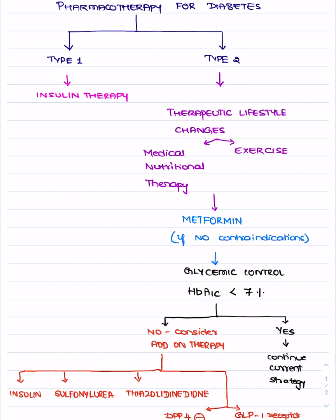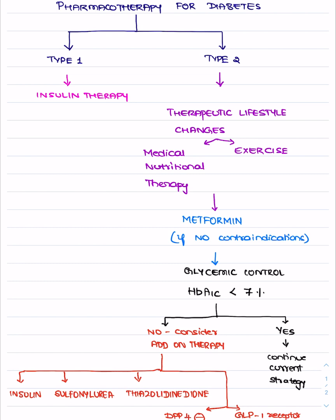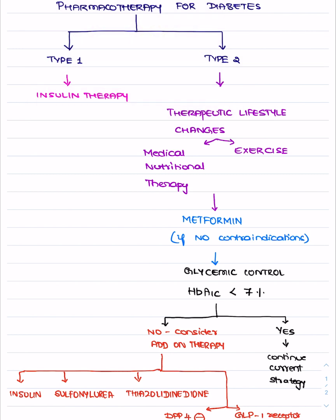You can also add GLP-1 receptor agonists as add-on drugs. If you are not able to get blood sugars under control, the next final step will be insulin administration. When using insulin, you need to calculate the dose required for the patient — individualization of dosage is very important. If the dosage pattern is not proper, the patient may experience complications such as hypoglycemia or severe hypoglycemic episodes.